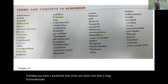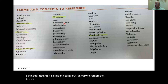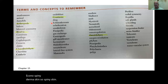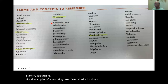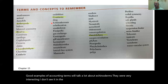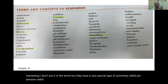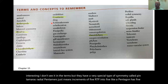Echinodermata is a big term but easy to remember. Echino means spiny, derma means skin — so spiny skin. Starfish and sea urchins are good examples of echinoderms. They have a very special type of symmetry called pentamerous radial — pentamerous just means increments of five, like a pentagon with five points.